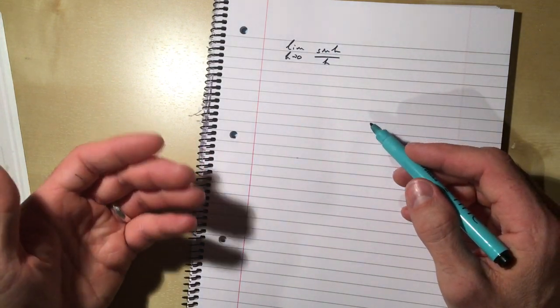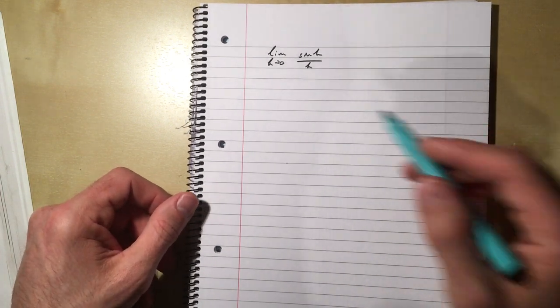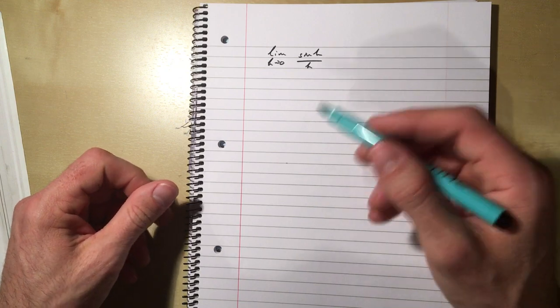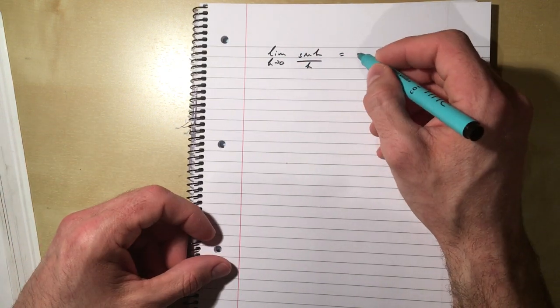Now, we need this because we're going to do the limit definition of a derivative and prove the derivative of sine is cos. And this happens to be a limit that we're going to need. So there's no particular reason for this at the moment. I'm just showing you this because in a minute, it's going to be helpful.